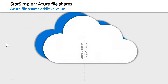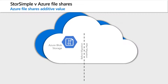Let's start by looking at a high level how Azure File Shares compares and adds value to StoreSimple. In Azure, we have two different types of storage: object storage implemented as Azure Blob Storage, and file storage supported by Azure Files and Azure File Sync.